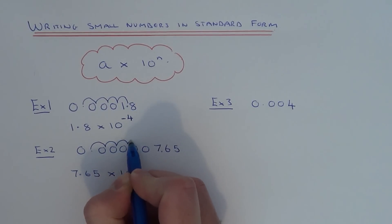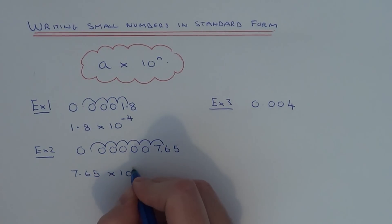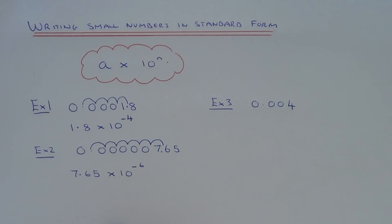1, 2, 3, 4, 5, 6, so just remember to put a negative power there because it's a small number. So it's 7.65 times 10 to the minus 6.